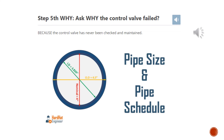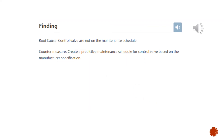We reached the fifth why: why did the control valve fail? We noticed that the valve had never been checked or maintained since it was installed. Finally, based on the 5Y analysis, we were able to identify the root cause of this problem, which was ultimately due to a lack of a maintenance schedule.